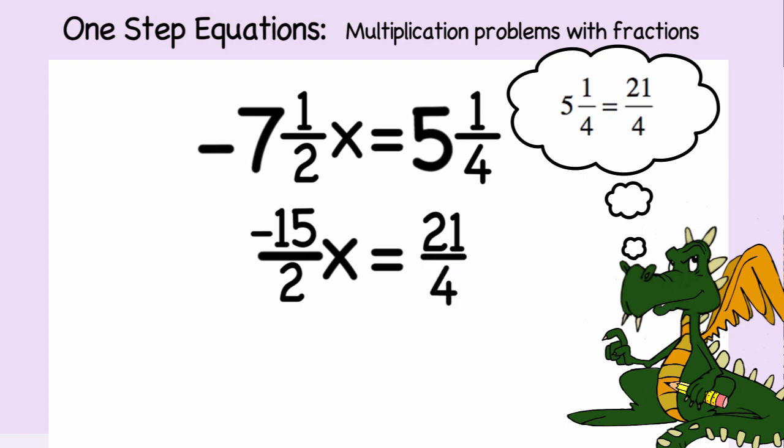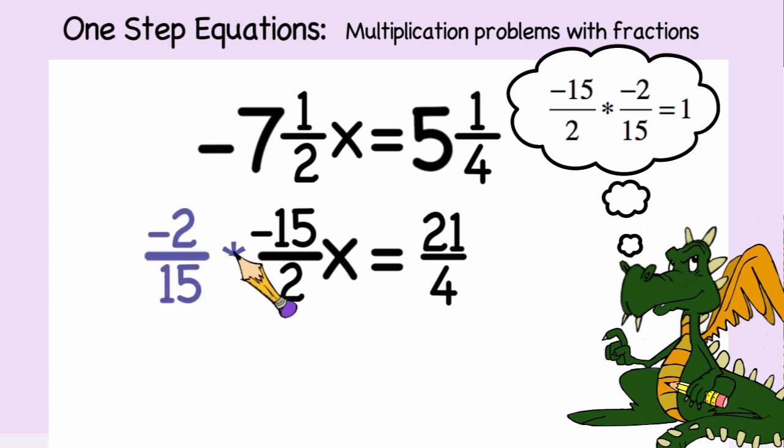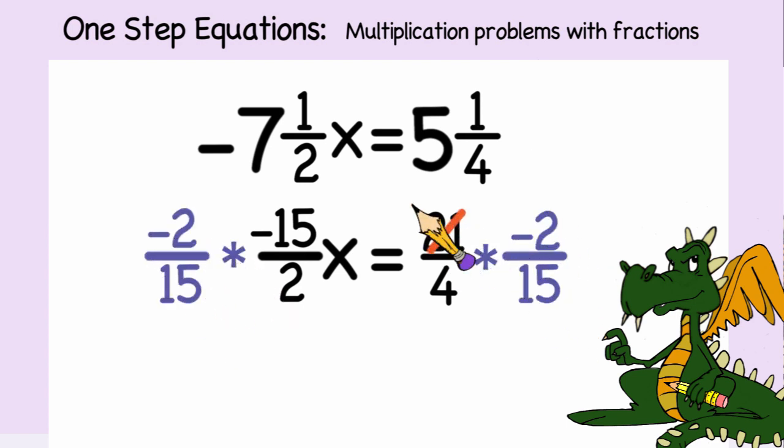The multiplicative inverse, or the reciprocal, of negative fifteen over two is negative two over fifteen. When we multiply both sides of the equation by negative two-fifteenths, we get x is equal to negative seven-tenths.